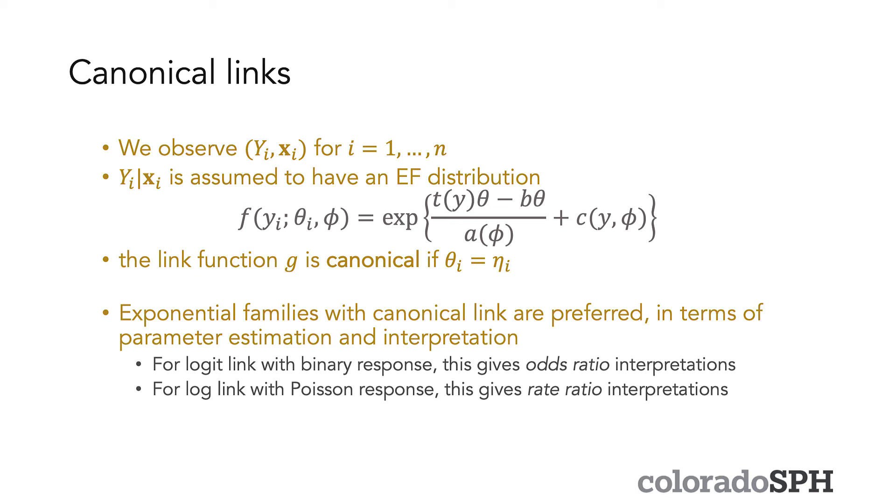And this is the slide that sort of ties together the stuff that we talked about in the last lecture with the exponential family and these three components of generalized linear models. So if we observe some outcome y and some set of covariates x for i equals 1 to n subjects, then if we're going to use a GLM, we assume that y_i given x has an exponential family distribution of the form that's printed here like what we've seen before.